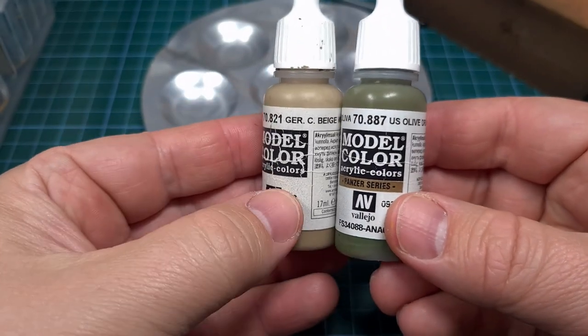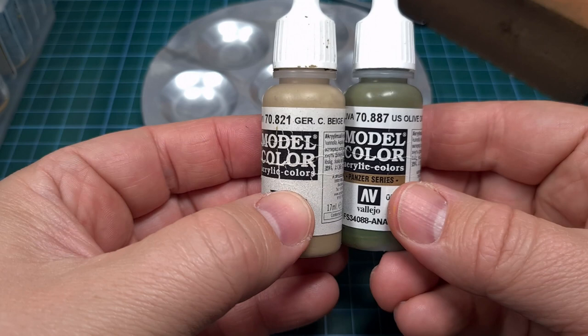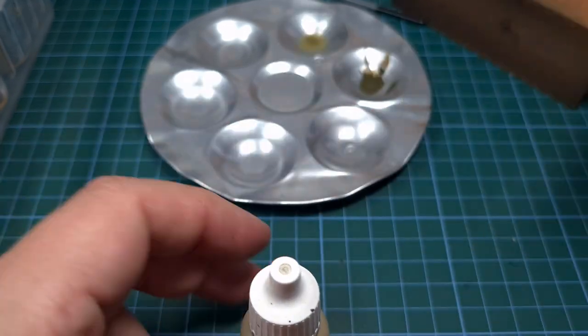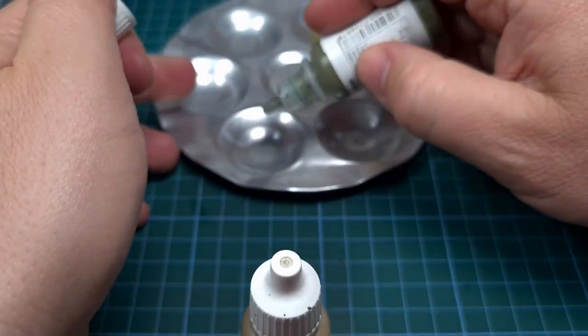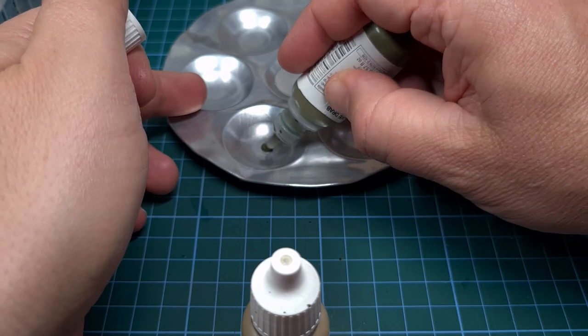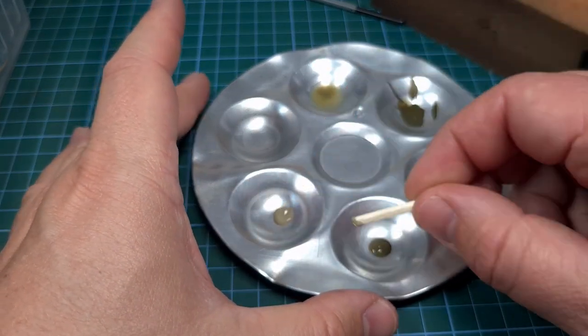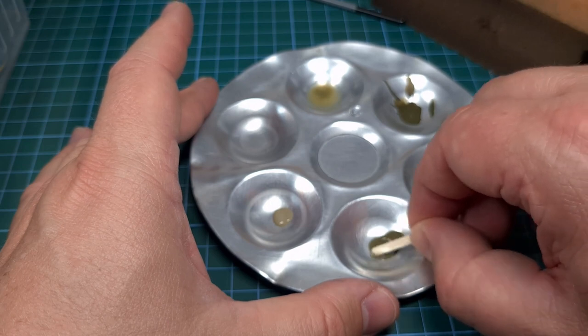Next up is some highlights. I'll be using German camouflage beige and I'll be mixing up a lighter color with olive drab. This being my highlight color.